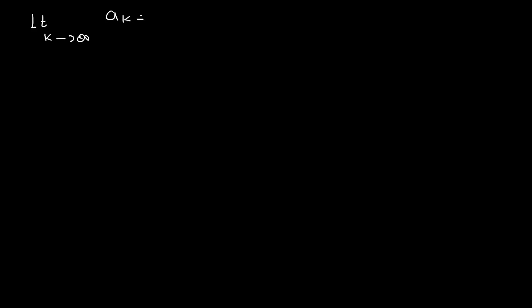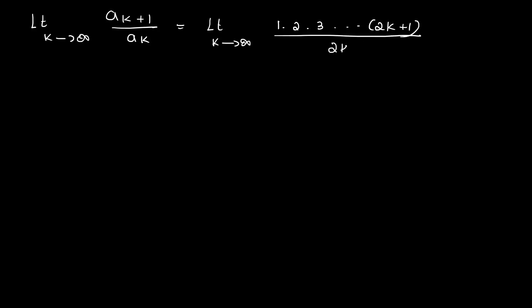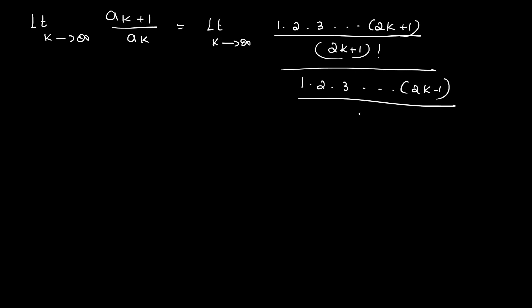Now let's compute the ratio Ak+1 divided by Ak. That is equal to the limit as k tends to infinity of [1·3·5·...·(2k+1)] / (2k+1)! divided by [1·3·5·...·(2k−1)] / (2k−1)!.